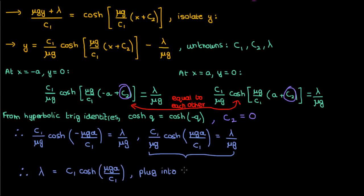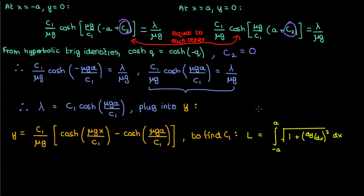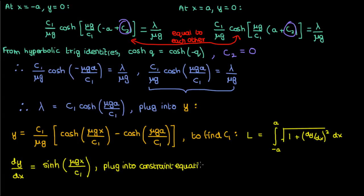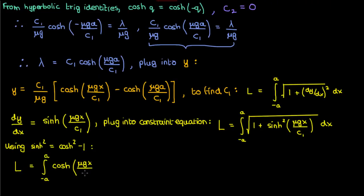Plugging this back into our equation for y, all that's left is to find c1, and we've used up both boundary conditions. The equation we need is the constraint equation. We already know y, so we can determine dy by dx, which is the hyperbolic sine of (mu g x over c1). Plugging this into the constraint equation and using hyperbolic trig identities simplifies the integral to the integral of cosh(mu g x over c1).